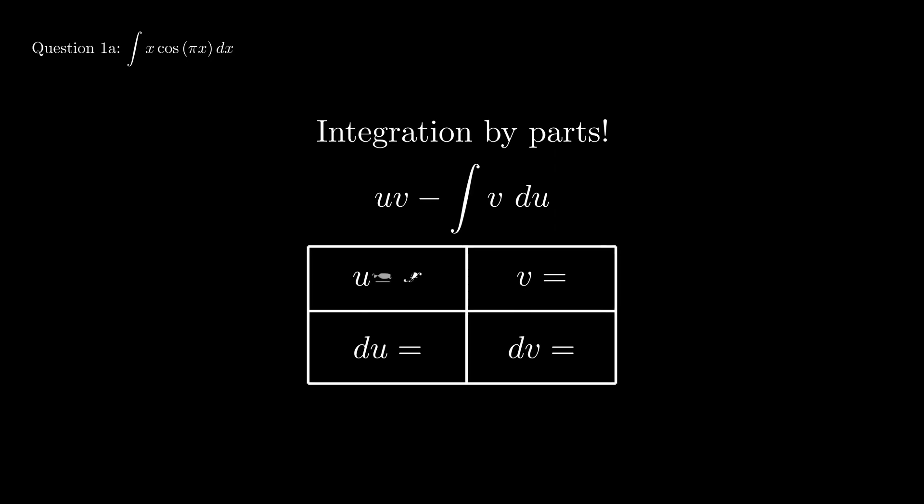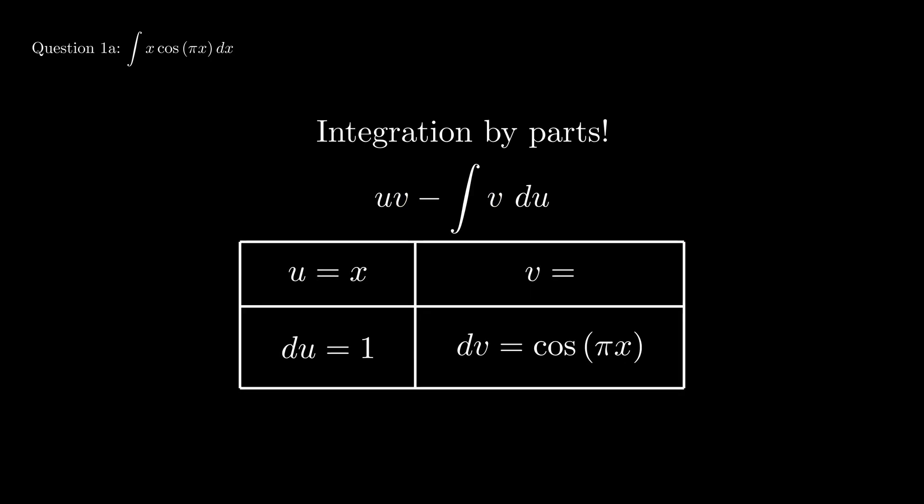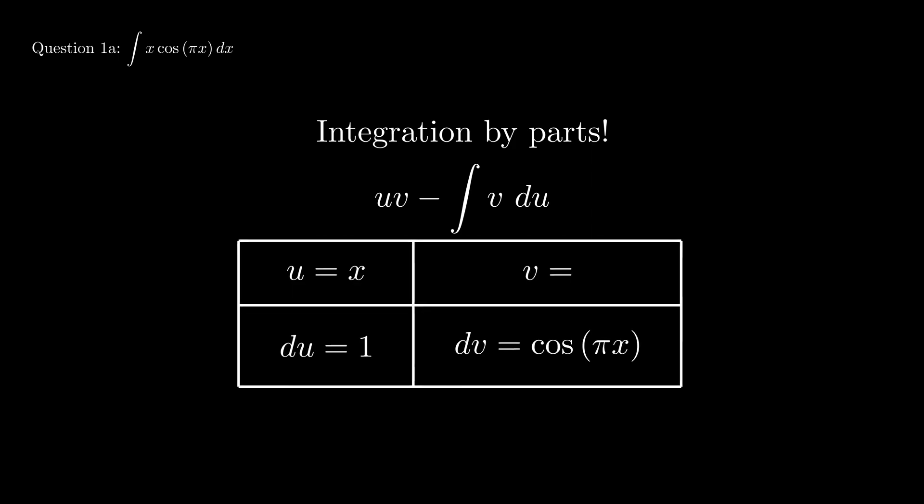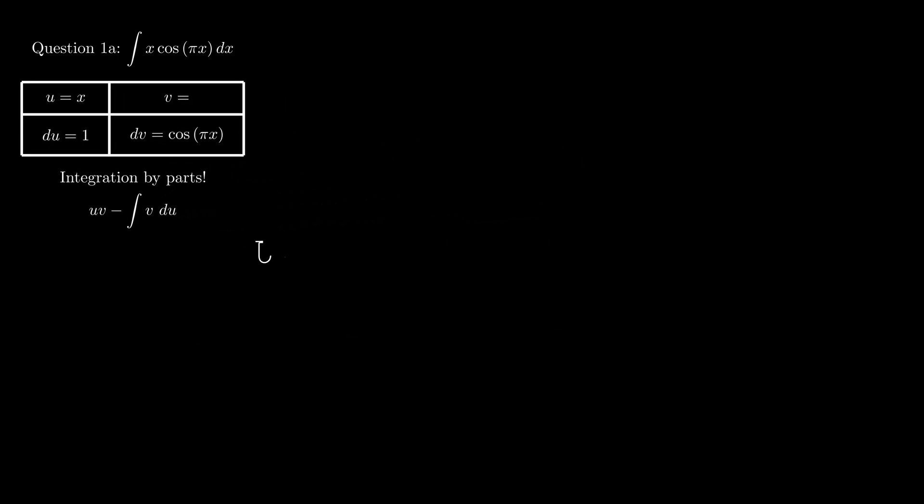In this case, our u is x, and the derivation of that would simply be 1. Next, we take cosine of pi times x and set that as our value for dv. But we only care about v, so we must find the antiderivative of cosine of pi times x. This is quite trivial since all we need to do is just use u substitution. Our u would be pi times x because we want to rewrite the equation in the format of cosine of u.